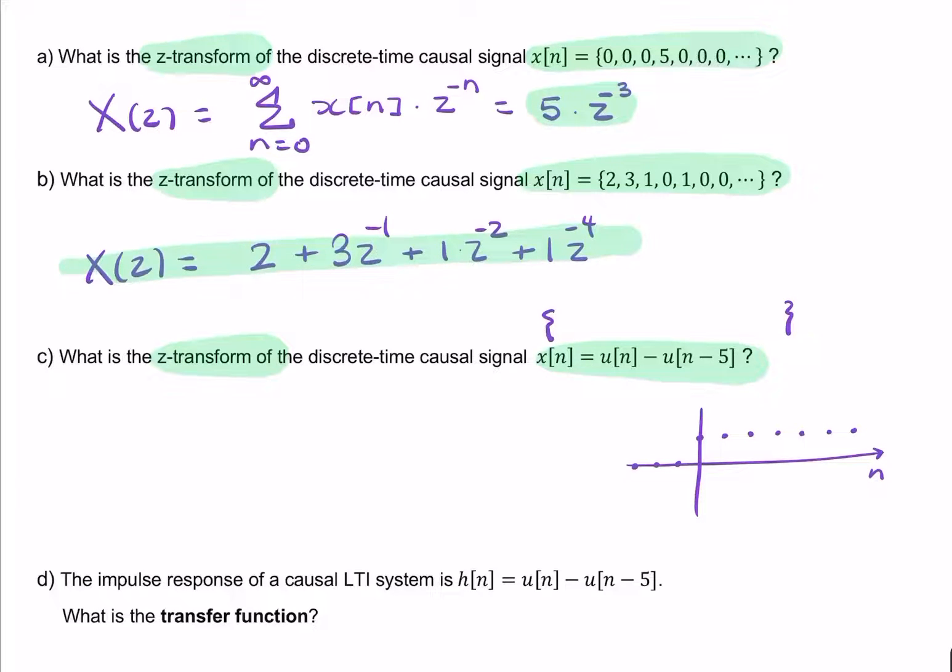But then you have at n equals 5, you have another unit steps subtracted. So at 0, 1, 2, 3, 4, 5, here we're subtracting a unit step. So our final value, or final plot, would look something like this. So you'd have the unit step from 0 until n equals 4, and then at n equals 5, it's back to 0s. So you've got 0, 1, 2, 3, 4, 5, 6.